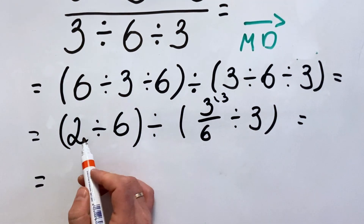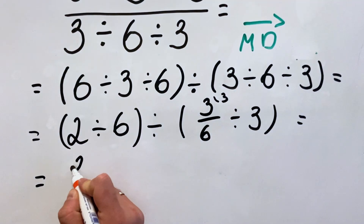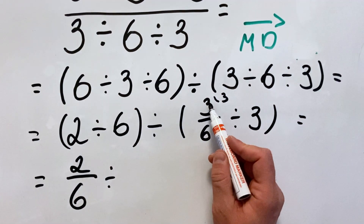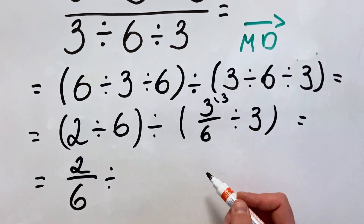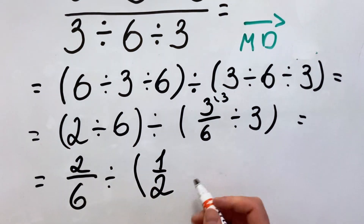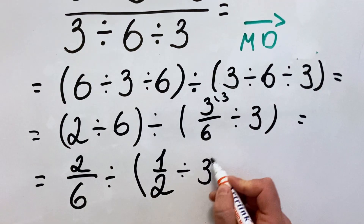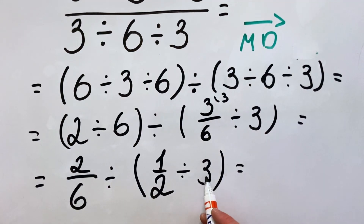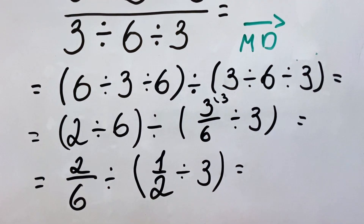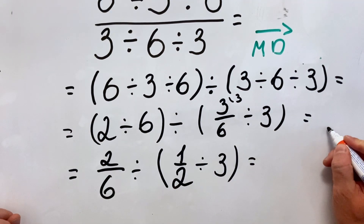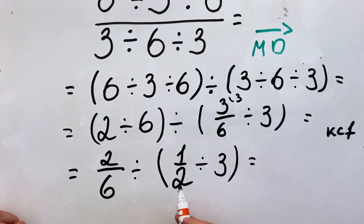Then what do we get? We have 2 divided by 6, which we will simplify. So we have 2 over 6 divided by — here, 3 over 6 simplifies to 1 over 2, divided by 3. What we know is that to divide by a number, when we have a fraction divided by a number, you multiply by the reciprocal. Or you can use the KCF rule — Keep, Change, Flip — which means keep the first, change the sign, and flip the second.